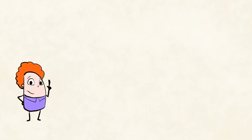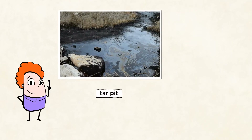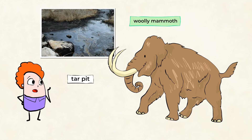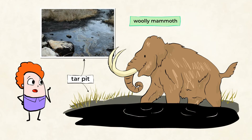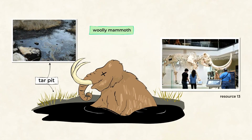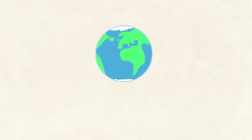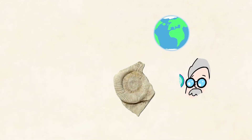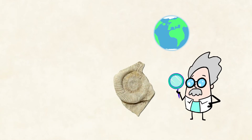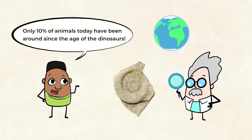In addition, there are similar organisms found frozen in ice or in tar pits. A great example are woolly mammoths — woolly mammoths are extinct, but their fossils are stuck in tar pits and are preserved for us to study. Animals have been on earth for a very long time, and fossils have taught us a lot about animals that don't exist anymore. Did you know that only 10% of animals today have been around since the age of the dinosaurs? This means that somewhere along the line, animals have a common ancestor that allows all animals to be related.